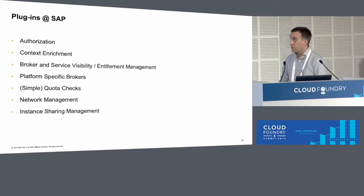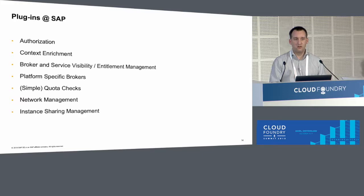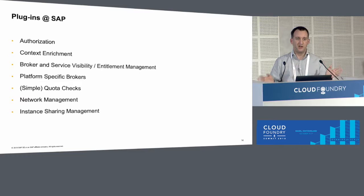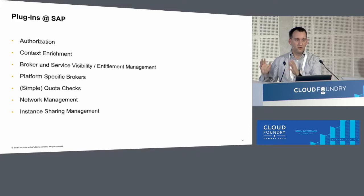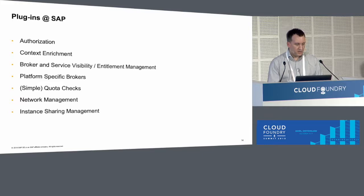To give you some examples of the plugins we are building at SAP — some already exist, some we are working on. Authorization is one of those: the open source implementation provides authentication through OAuth, but if you want authorization, you have to build your own plugin to find out if the person making the request is actually allowed to do this. This is very specific to the cloud provider. What we do in the SAP domain model and the permissions there is probably not transferable to any other cloud vendor. Context enrichment is another interesting one.